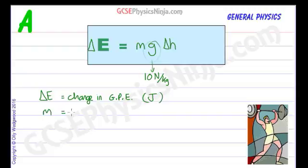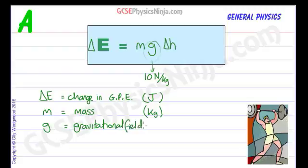M stands for mass, of course, and the standard unit for mass in physics is the kilogram. G is the gravitational field strength, and on Earth, I said that's about 10 newtons per kilogram, so the unit is newtons per kilogram, because that's telling you how much force gravity pulls down on each kilogram of mass that you have.